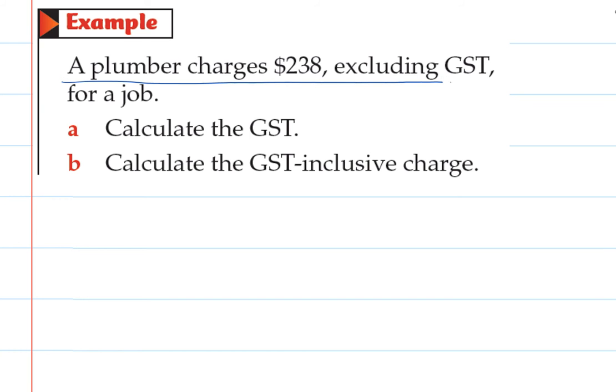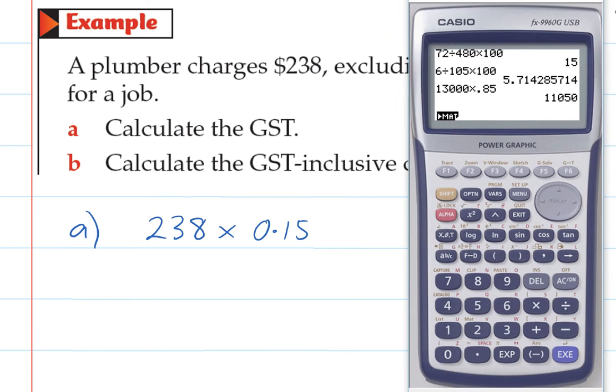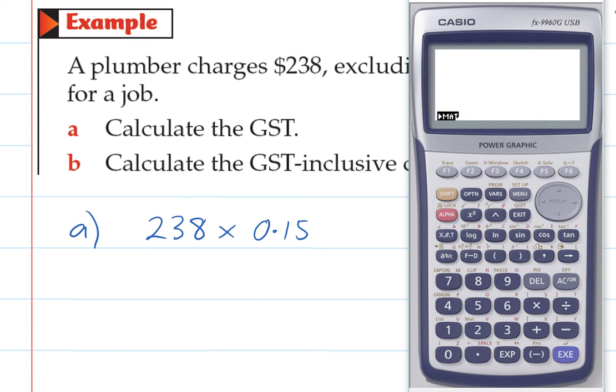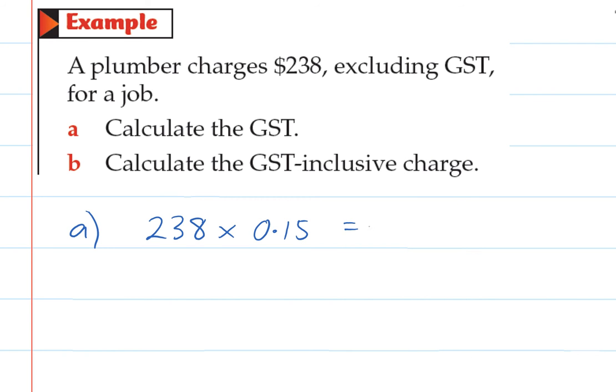So here a plumber charges $238 excluding GST for a job. So the first question is asking us to calculate the GST. So that's just asking what is 15% of 238? So we go 238 times 0.15 for 15%. Then we get our calculator out. And we have 238 times 0.15. And so that's $37.70.